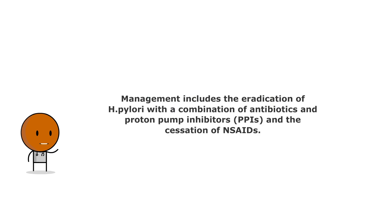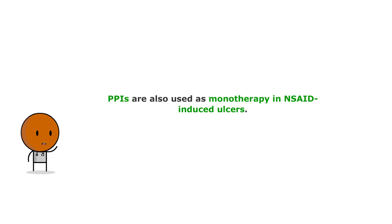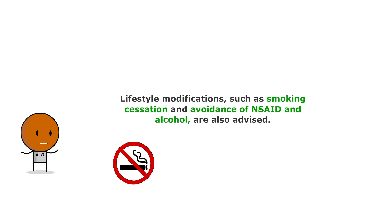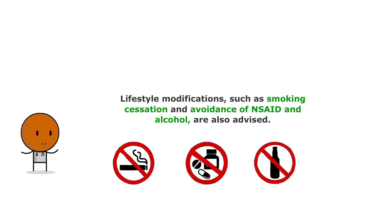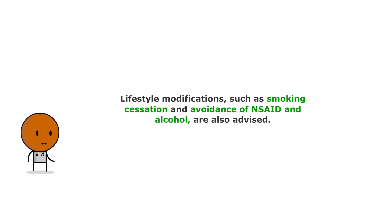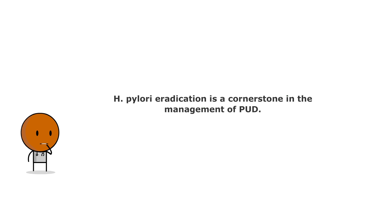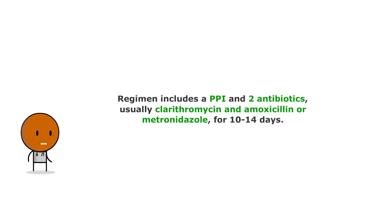The management of peptic ulcer disease includes the eradication of H. pylori with a combination of antibiotics and proton pump inhibitors, and the elimination of future NSAID usage. Proton pump inhibitors are also used as monotherapy in NSAID-induced ulcers. Lifestyle modifications such as smoking cessation and avoidance of NSAIDs and alcohol are also advised. H. pylori eradication is a cornerstone in management. The typical regimen includes a PPI and two antibiotics, usually clarithromycin and amoxicillin or metronidazole, for 10 to 14 days.